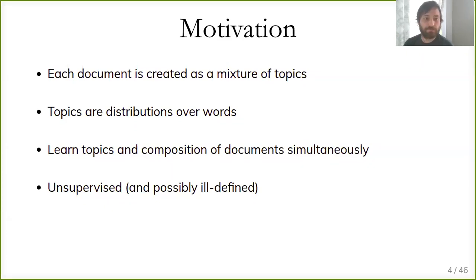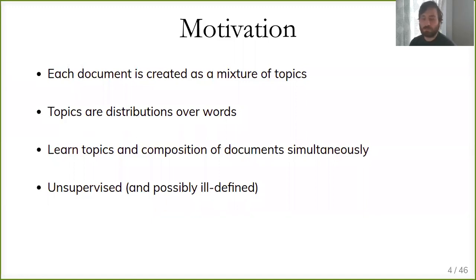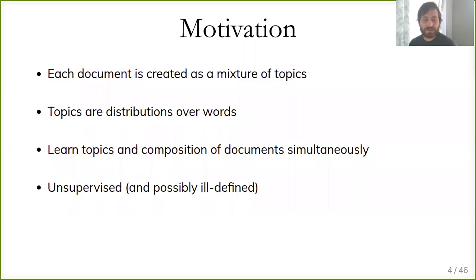We often think of topics as distributions over words, using single tokens as the elementary unit, though bigrams or trigrams are possible. Given a feature vector of say 100,000 words, for each topic each word has a particular probability. We're trying to learn the topics together with how each document is made up of those topics simultaneously. This is an unsupervised and potentially ill-defined problem, quite similar to dimensionality reduction or clustering.